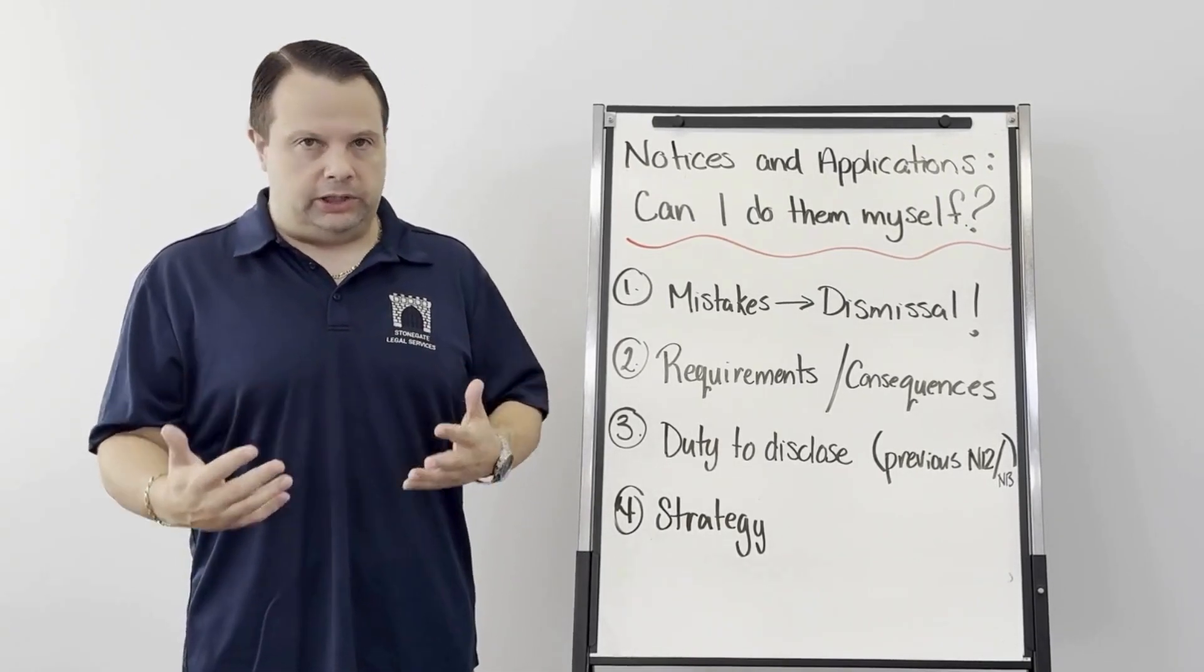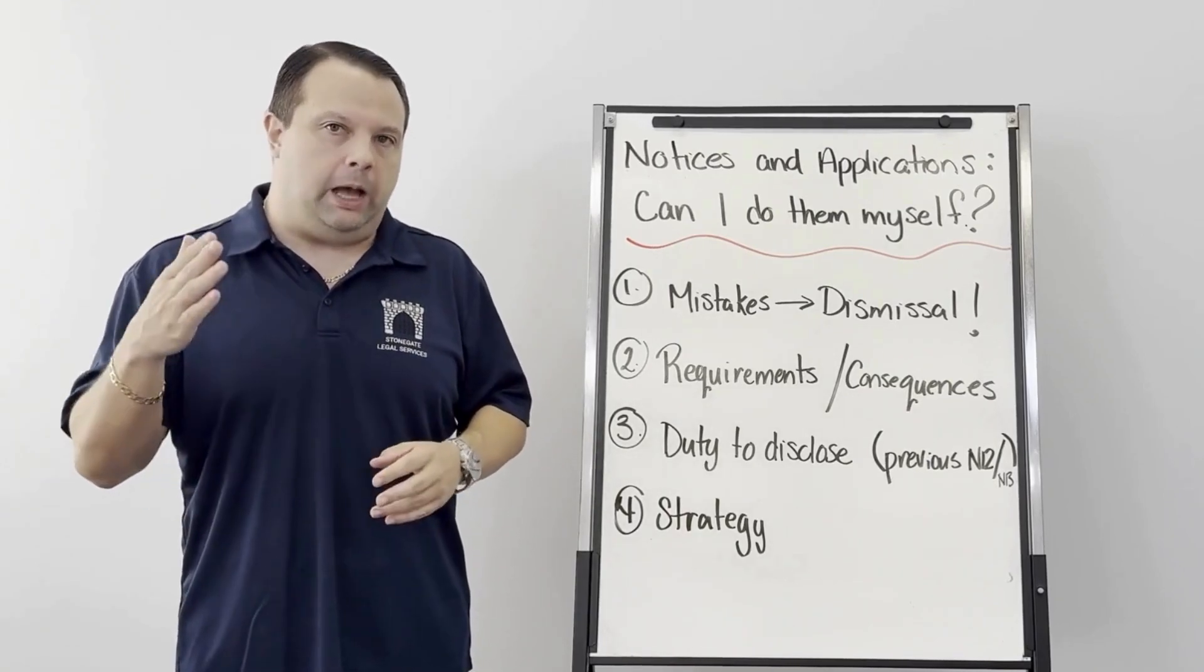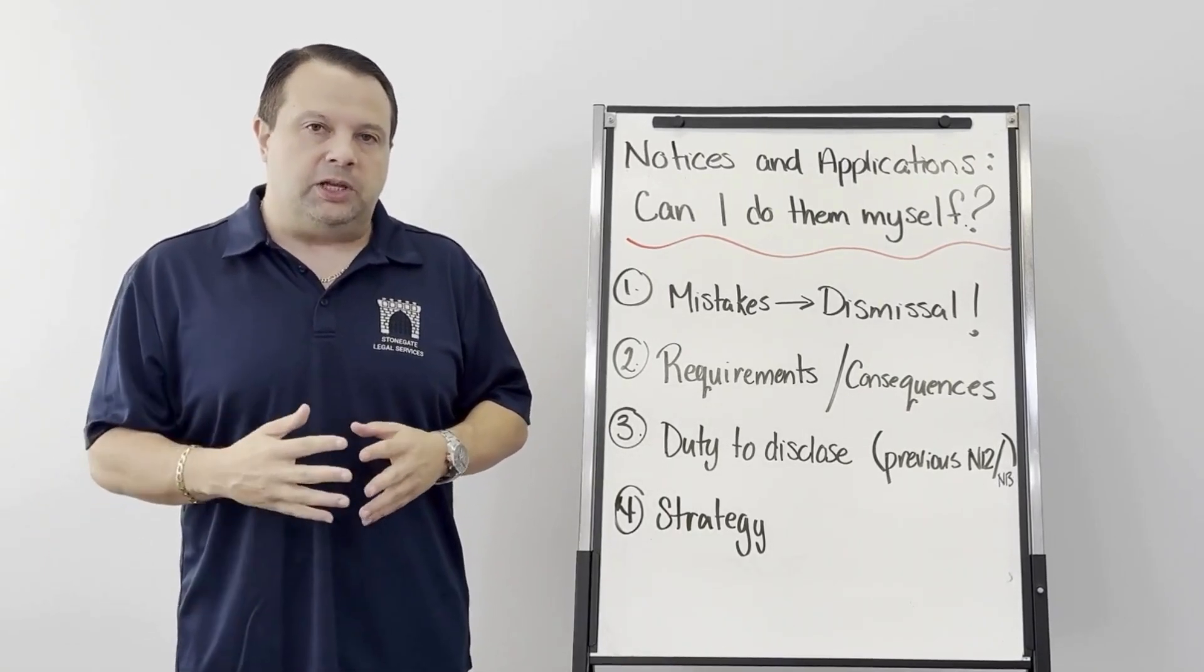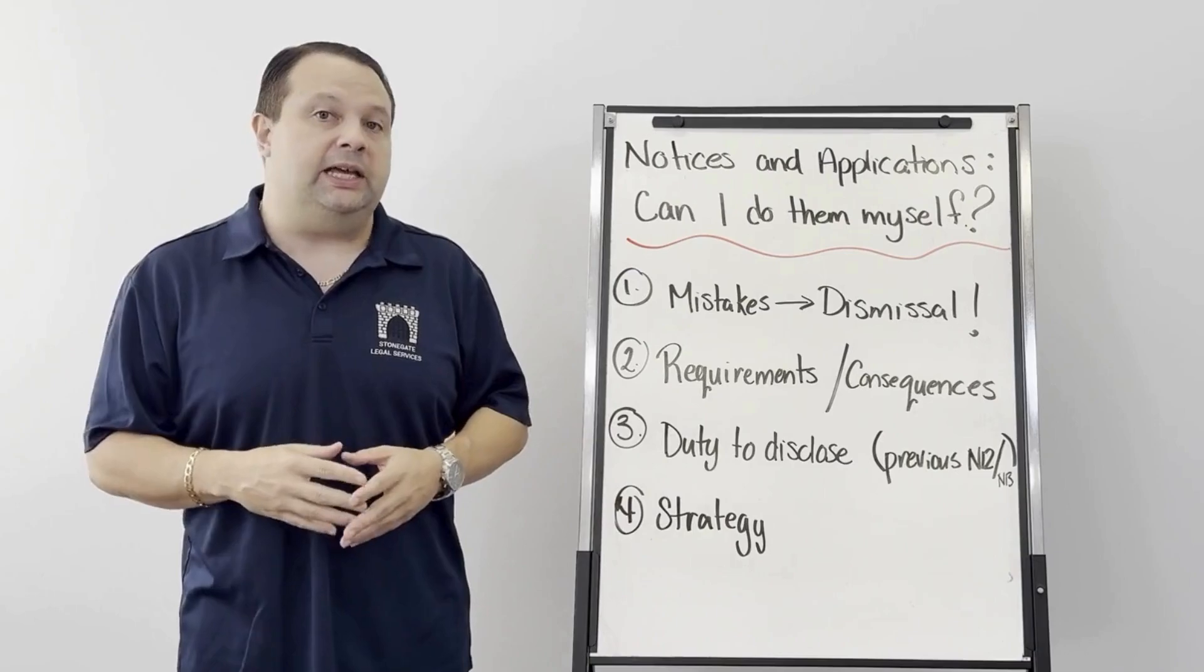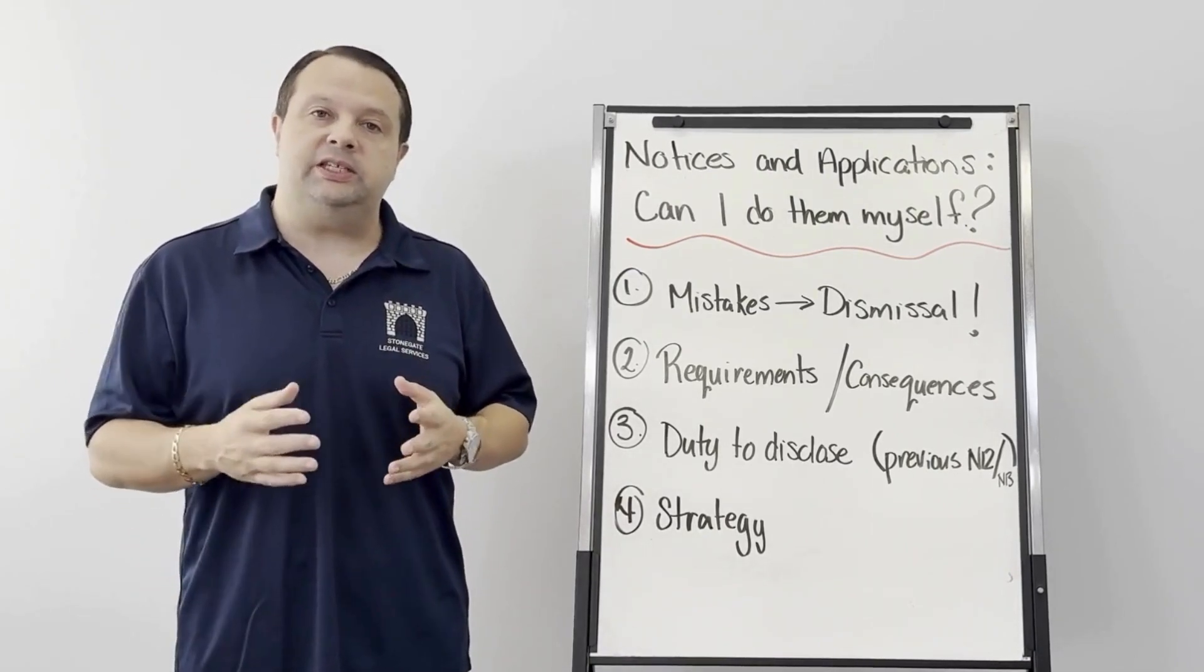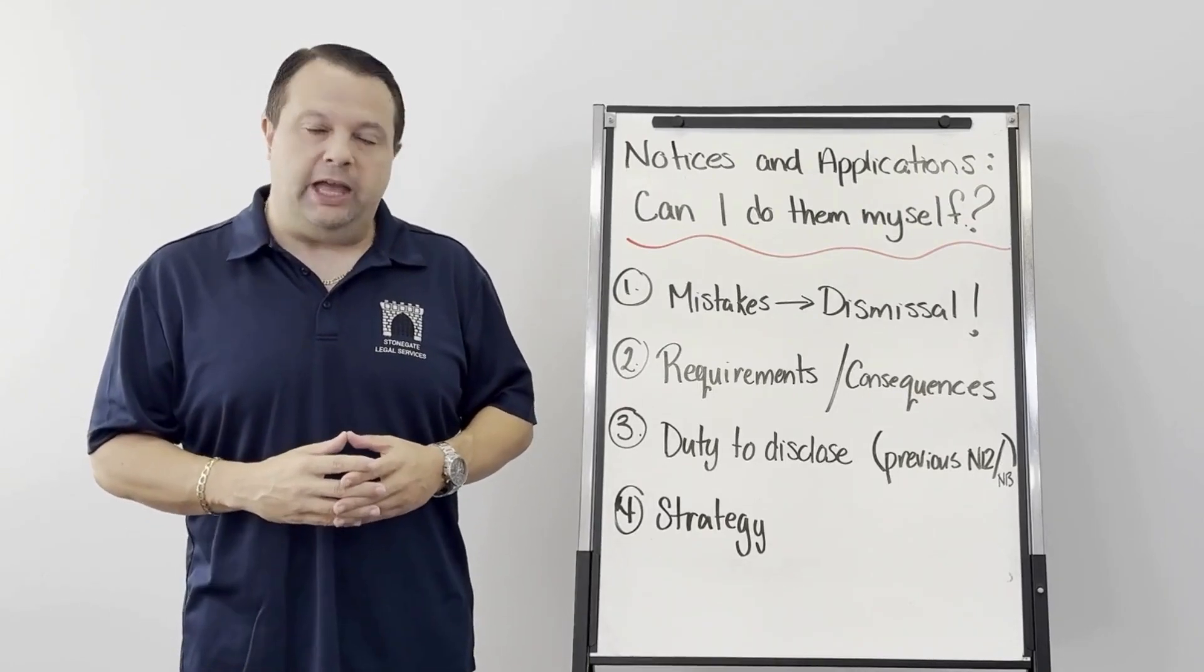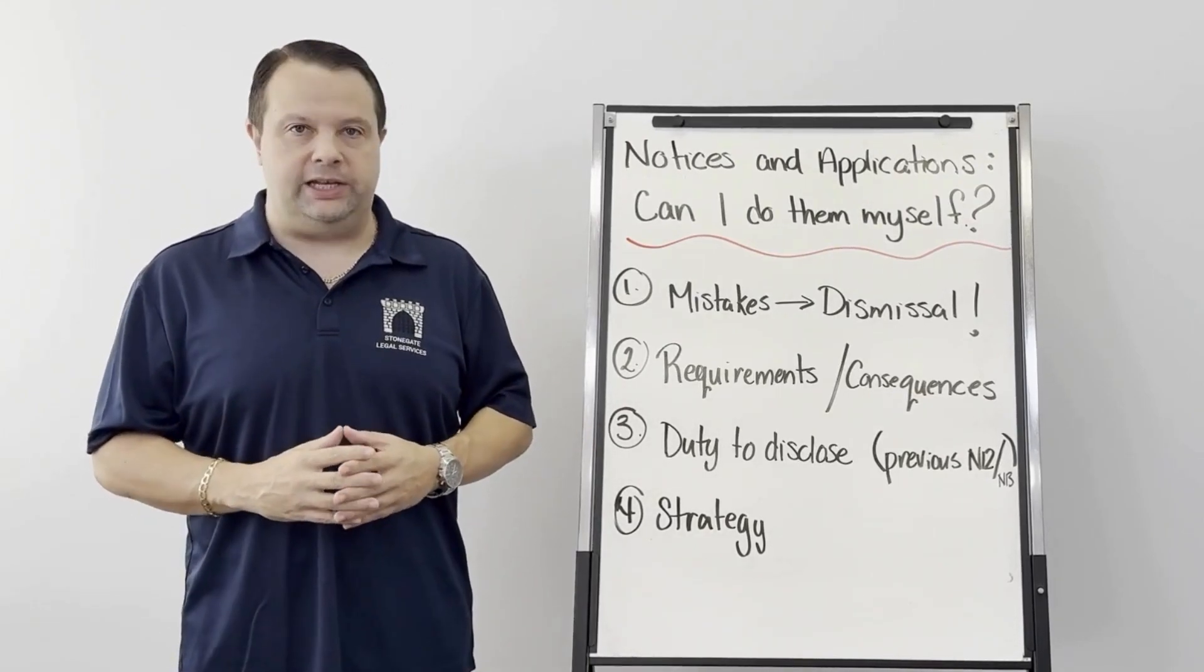So when you hire a legal rep, they should let you know that if plan A doesn't work, we can now pursue plan B. Something that I always tell our clients is that the tenant needs to know that one way or another, this matter is coming to an end. I hope you find this video informative and if you have any questions, let us know.